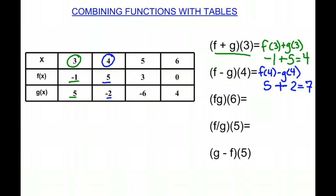And we're looking at (fg)(6). So when x is 6, f(6) times g(6). f(6) is 0, and g(6) is 4. 0 times 4 is 0.